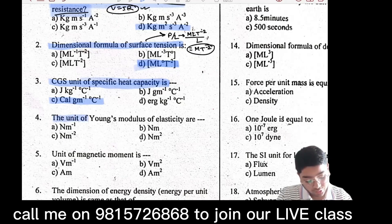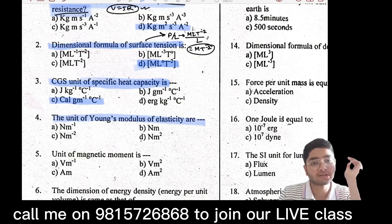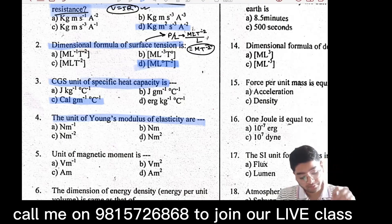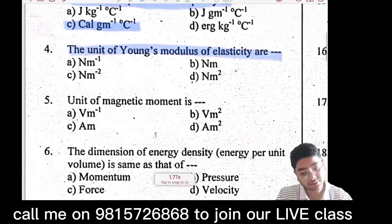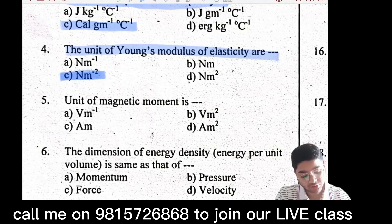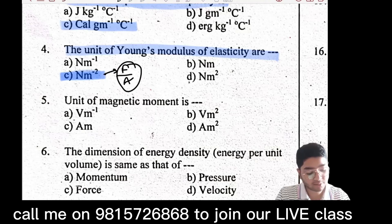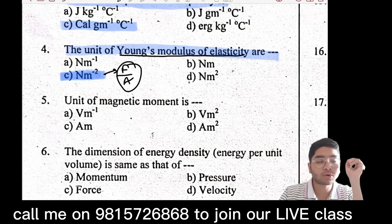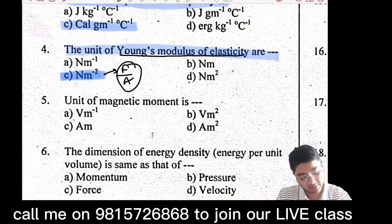The unit of Young's modulus of elasticity — what is the unit? The answer is Newton per meter square, because Young's modulus of elasticity is force upon area. So the unit is Newton per meter square.